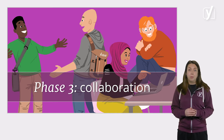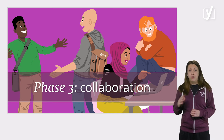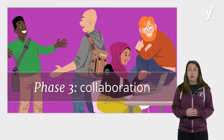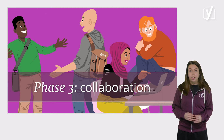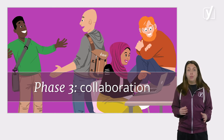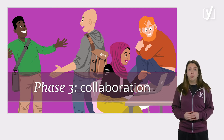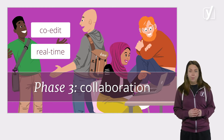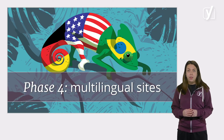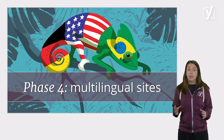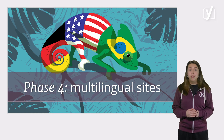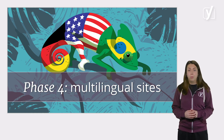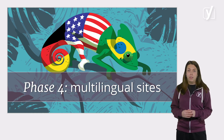The next phase of the Gutenberg project, phase 3, will be focused on collaboration. This phase will introduce a feature that allows multiple authors to collaborate and co-edit posts on a site in real-time. Finally, phase 4 will be aimed at developing an official way for WordPress to support multilingual sites.